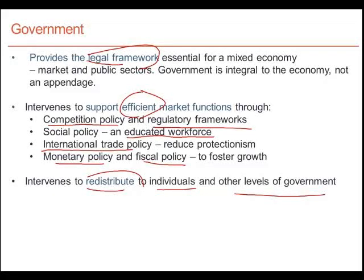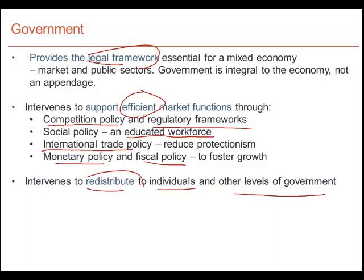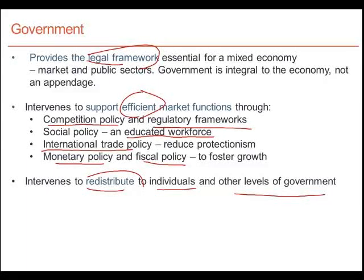To summarize this brief statement on the role of government: the government provides economic stability through the provision of a legal framework and the policing of that framework. It seeks to ensure in a variety of ways that the economy operates in an efficient manner, releasing the potential of the economy. And third, it intervenes to ensure a somewhat equitable set of outcomes by redistributing economic resources to individuals and to other regions where economic potential is lower.